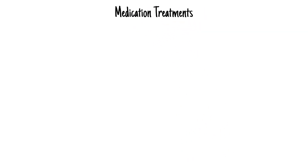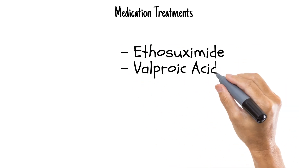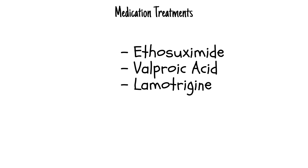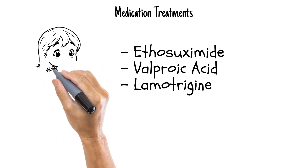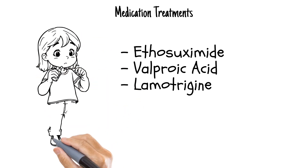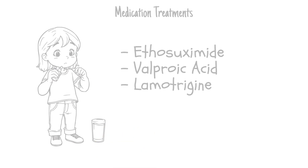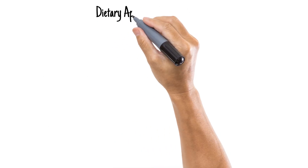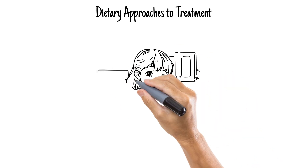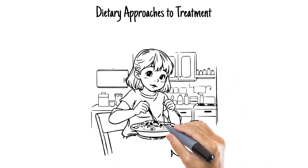How is absence epilepsy treated, and can a diet help? The most commonly prescribed medications for absence seizures are ethosuximide, valproic acid, and lamotrigine. Ethosuximide is usually the first choice for children with absence seizures alone, as it's effective and tends to have fewer side effects. For kids who don't respond well to medications or who have other seizure types, the ketogenic diet may be an option.